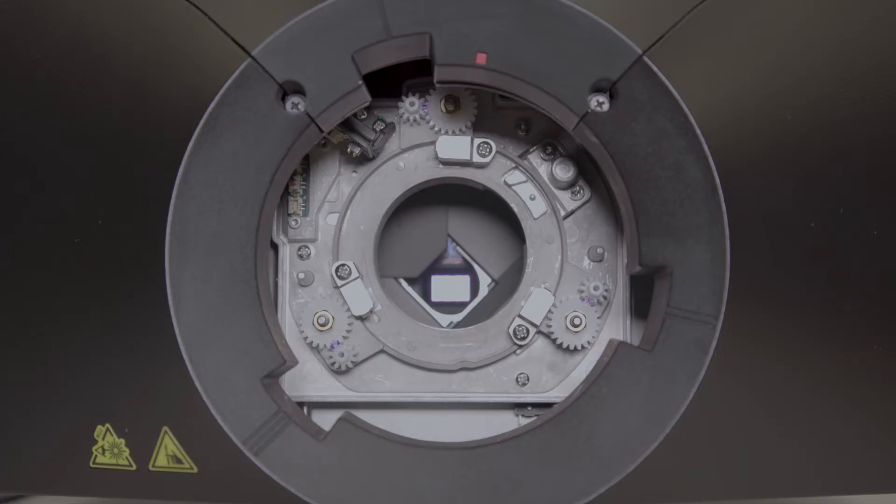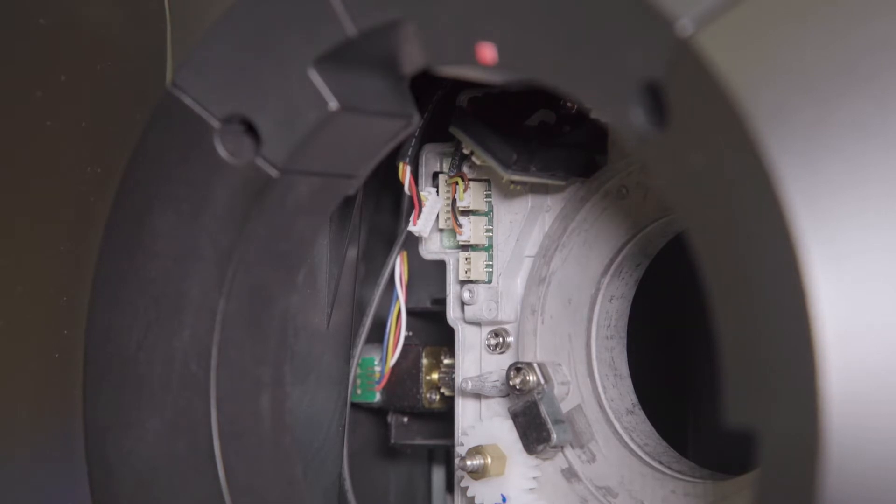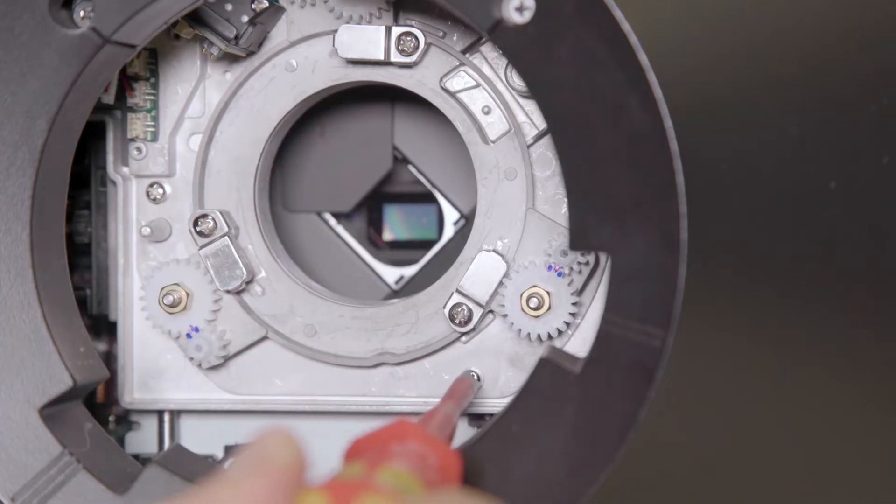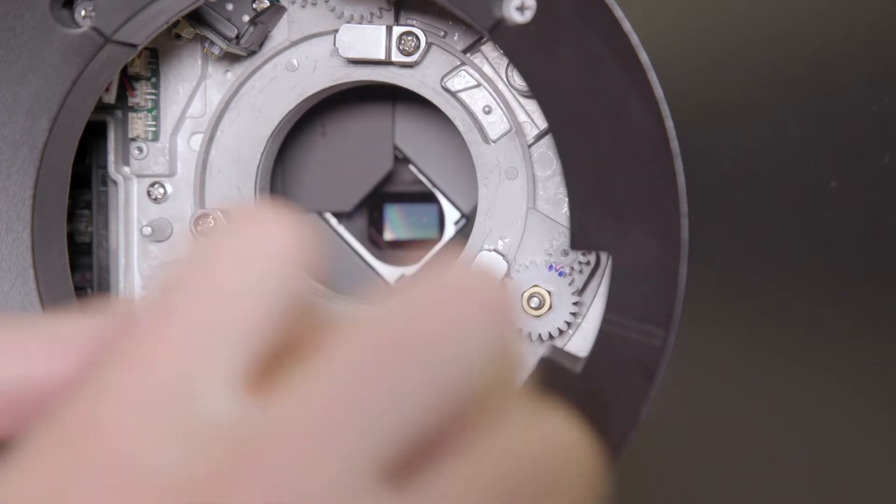Next the standard ball sight adapter will need to be replaced with a new UST adapter. You will first need to disconnect the connector cable from the ball sight adapter. Then remove the three screws which hold the adapter in place.